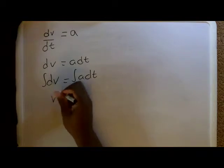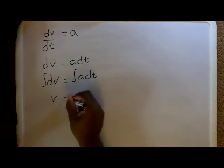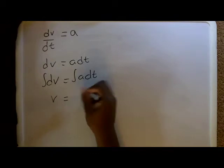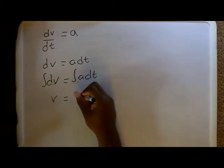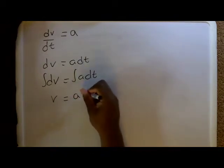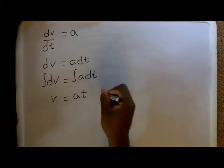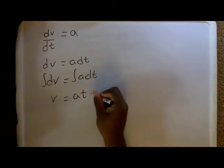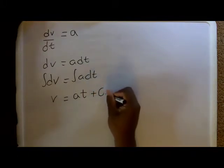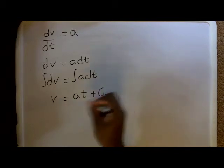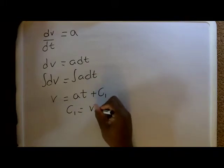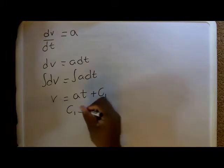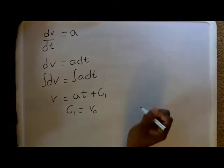So, this side will be v, which is velocity, and this side would be a, which is acceleration, times t, which is time, plus C1, which is a constant. C1 is basically the initial velocity, just the initial velocity.